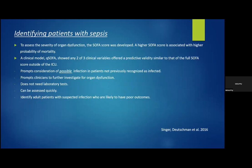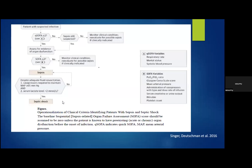To assess the severity of organ dysfunction, the SOFA score was developed. The higher the SOFA score, the higher the probability of mortality. A clinical model called the qSOFA showed that any two of the three clinical variables offered predictive validity similar to that of the full SOFA score outside of the ICU. These scores prompt identification of infection in patients not previously recognized as infected, prompt clinicians to investigate for organ dysfunction, do not need laboratory tests as they're clinically based, can be assessed quickly, and identify adult patients with suspected infection likely to have poor outcomes. The quick SOFA uses just clinical criteria including respiratory rate, altered mental status, and systolic blood pressure.